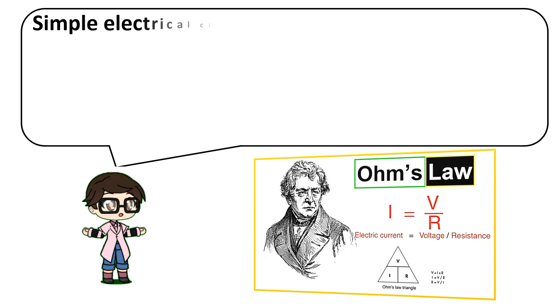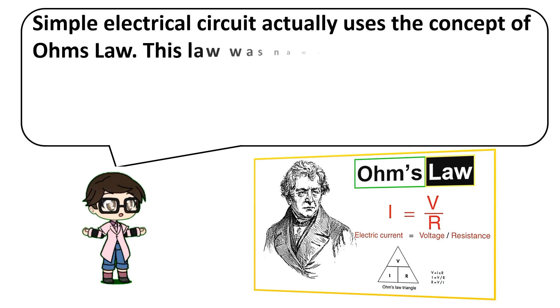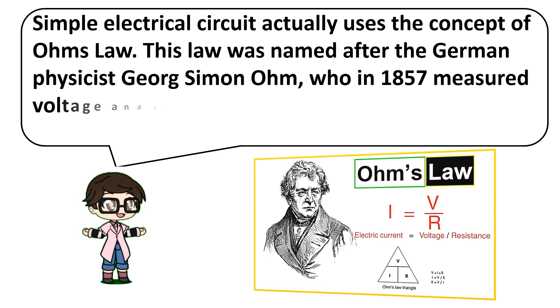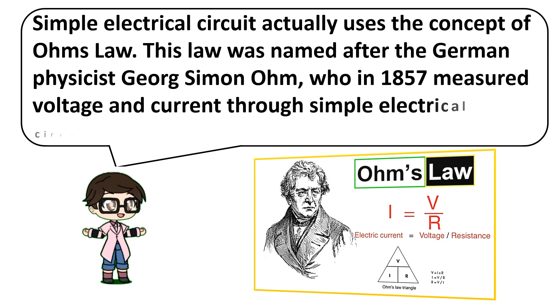Simple electrical circuit actually uses the concept of Ohm's law. This law was named after the German physicist George Simon Ohm, who in 1857 measured voltage and current through simple electrical circuits containing various lengths of wire.